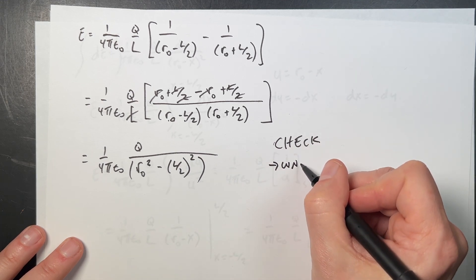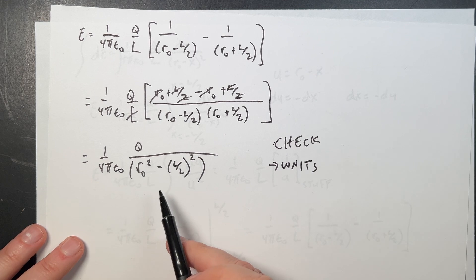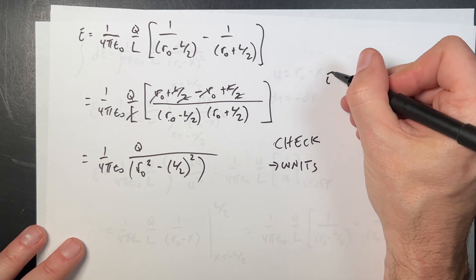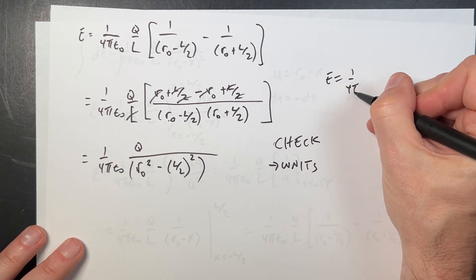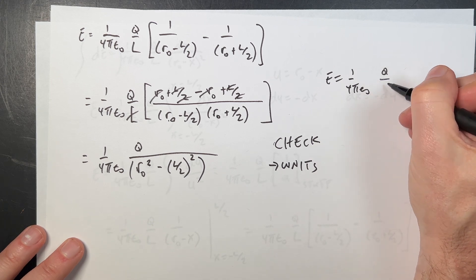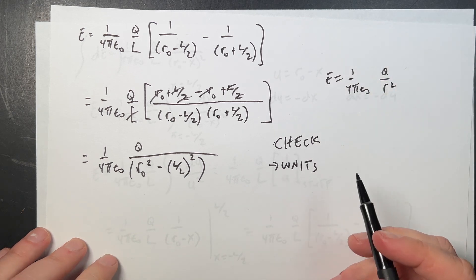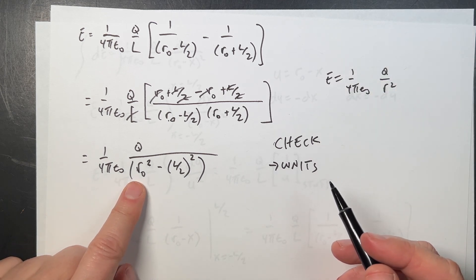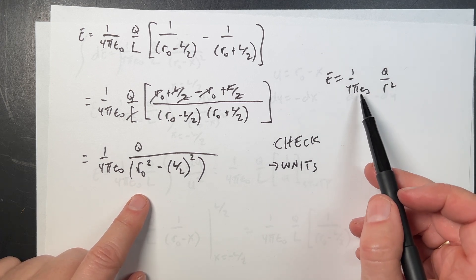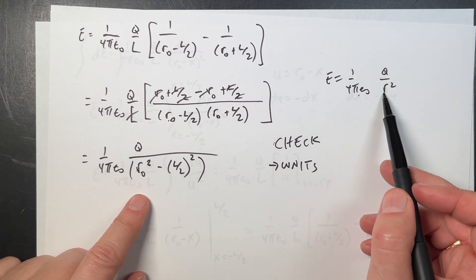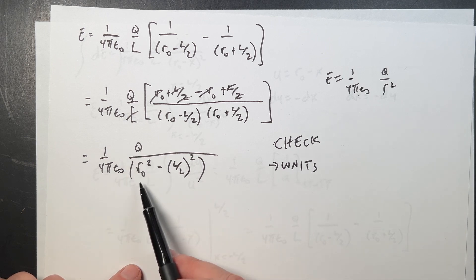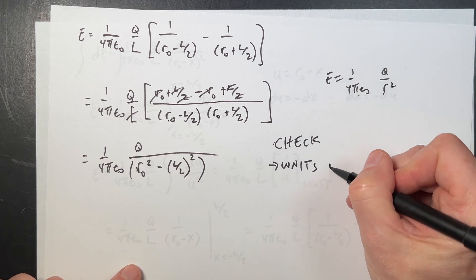Units. This should have the same units as a point charge. Remember, E equals 1 over 4π epsilon naught q over r squared. So as I move further away, this should be epsilon naught on the bottom charge over meter squared. Epsilon naught charge meter squared. Check.